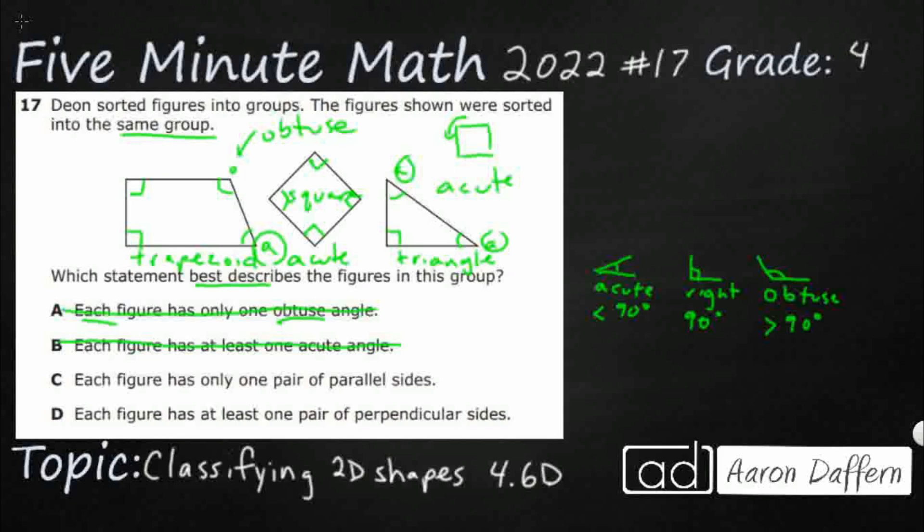If they have an answer selection that says each figure has at least one right angle, we're good to go. But I don't see that. But each figure does have at least one right angle. Let's look at this.